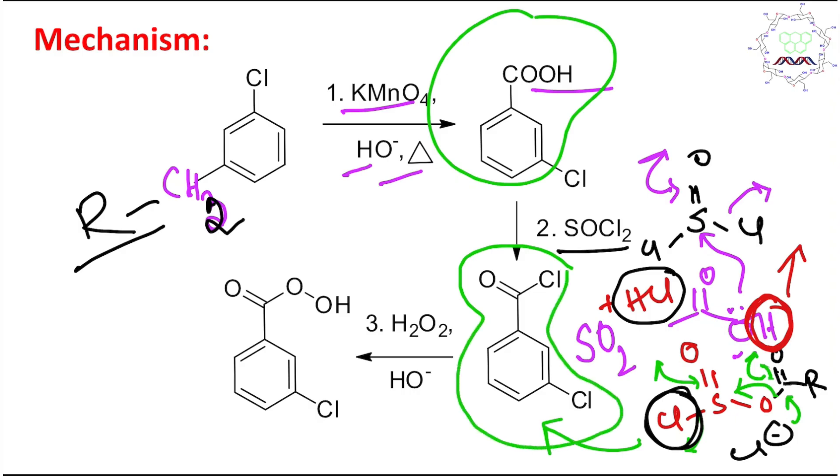In the next step is given hydrogen peroxide in presence of hydroxide. What does it do? This is a reagent which produces hydroperoxide anion.